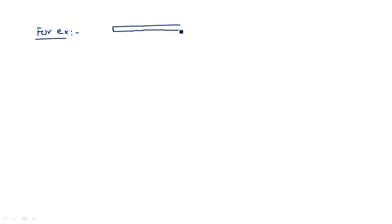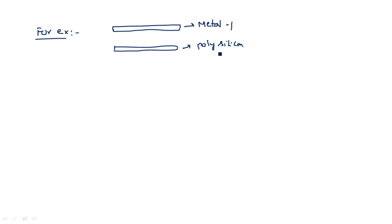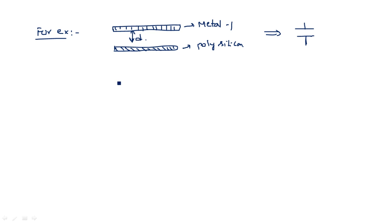For example, a metal-1 wire and a polysilicon wire are running side by side. Somewhere in a large circuit design, this situation definitely occurs where two conducting layers go parallel with a distance d between them. This resembles a capacitor action, and this is the interlayer capacitance. We are not intentionally creating it, but unfortunately some capacitances exist in the MOSFET circuitry like this.